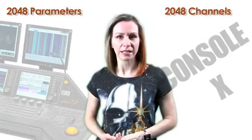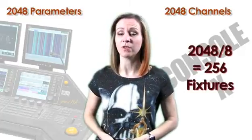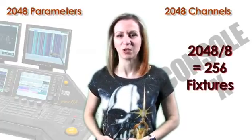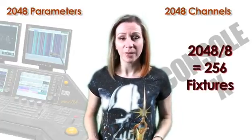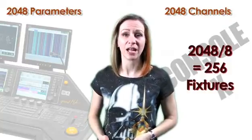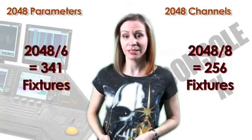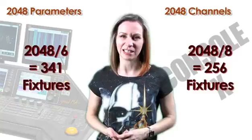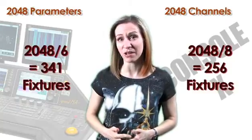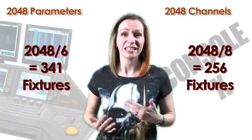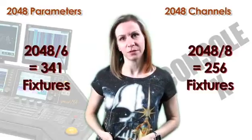Out of the box, a full-size Grand M.A. can calculate 2,048 parameters. Let's compare that to a console that can output 2,048 channels. Theoretically, console X has the channel capacity to patch 256 of our imaginary fixtures, while a Grand M.A. has the calculation capacity to patch 341. While this isn't a realistic scenario, you can probably start to see why calculation of parameters instead of channels is a bit more efficient.